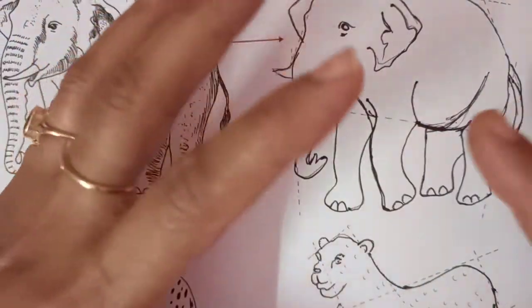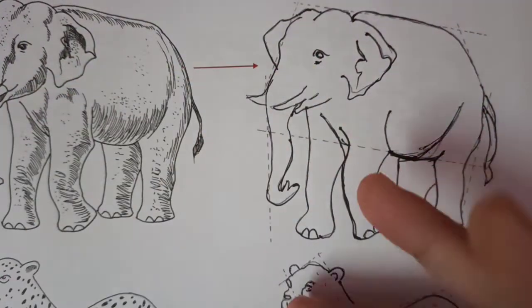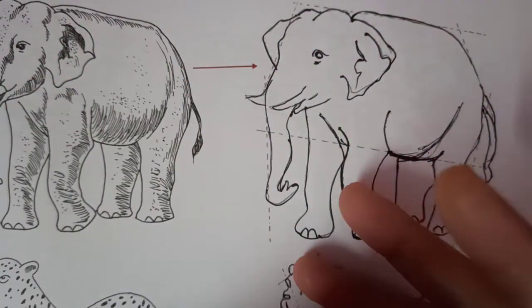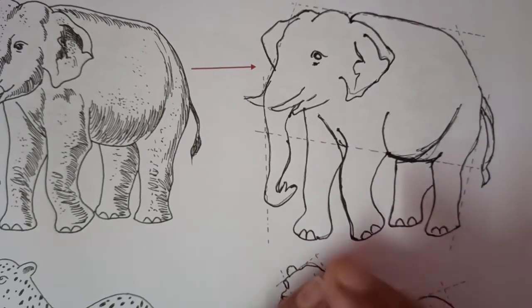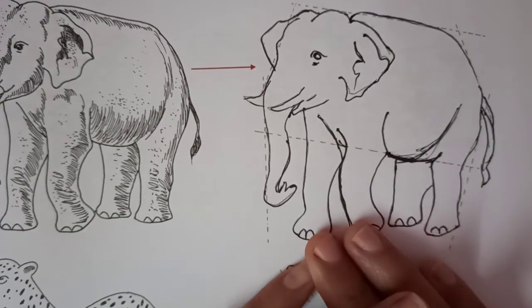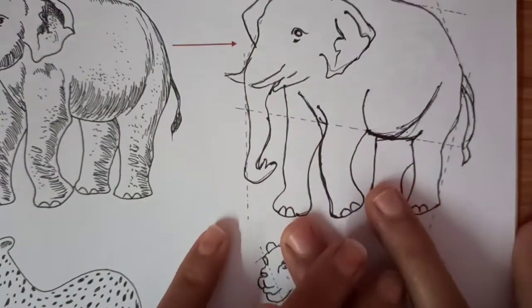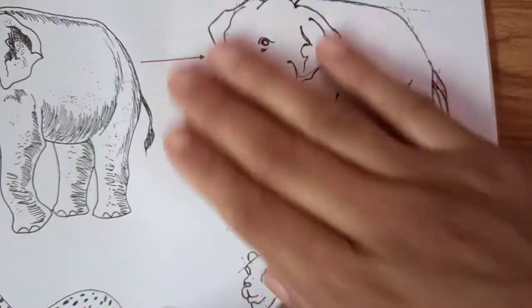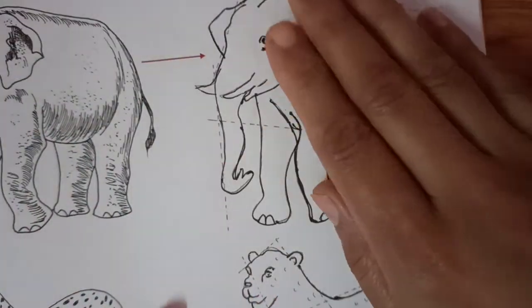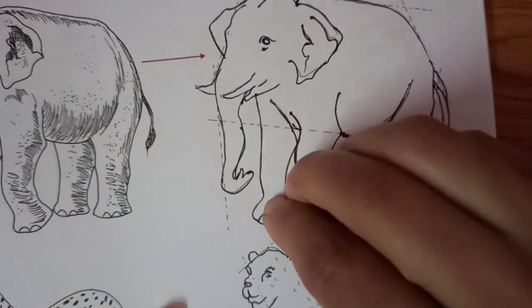What is the texture? All the animals in the zoo have different types of textures on their body. Texture means whatever you have on the surface — look at the design, what you have on the surface.